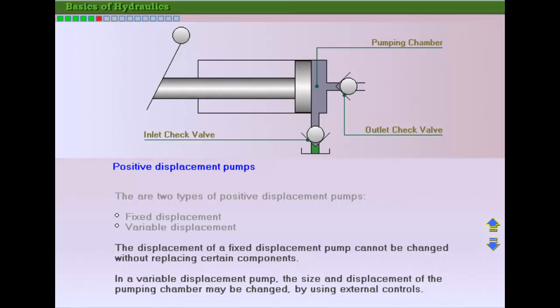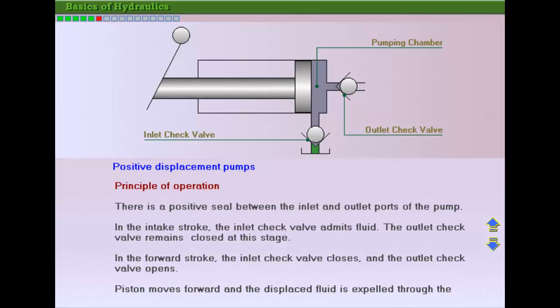In variable displacement pumps, the displacement of the pumping chamber can be changed by using external controls or integral pressure compensator devices. Let's see how it works on a simple hand pump.